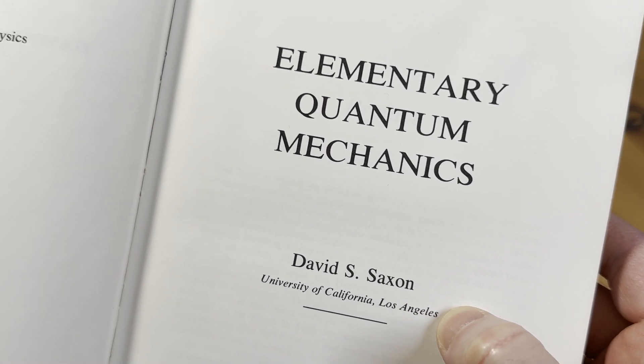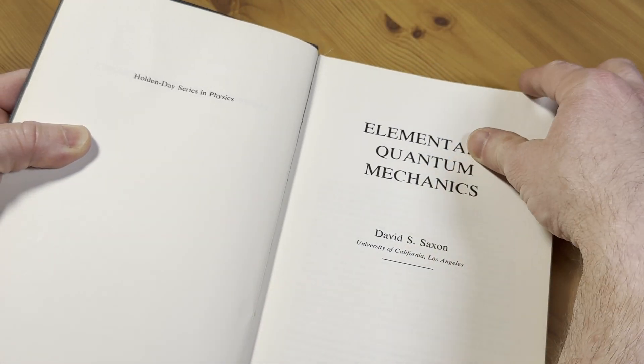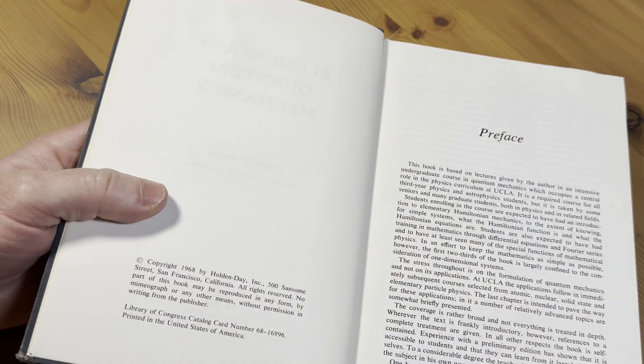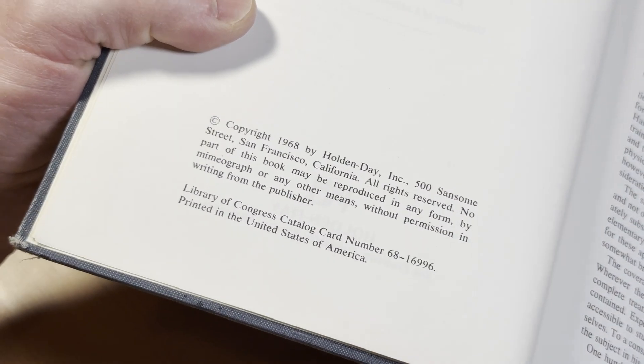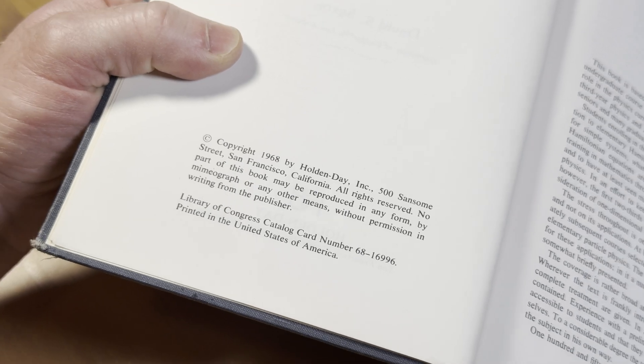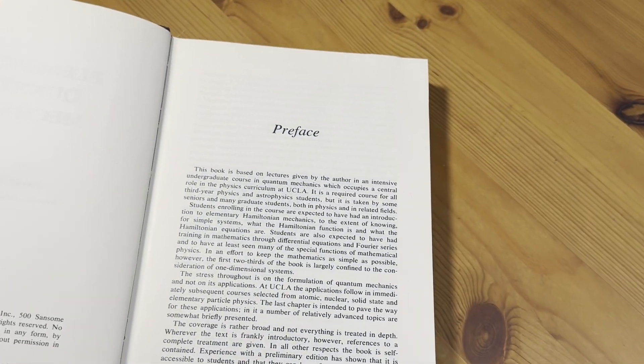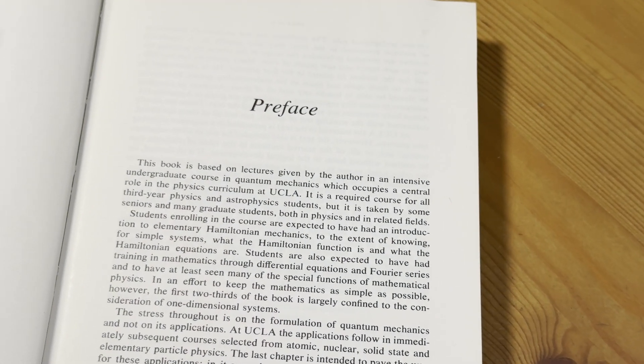David S. Saxon, Elementary Quantum Mechanics. And here is the copyright. I believe this is the first edition, 1968. That was a long time ago. I didn't even exist. Many of the viewers here of this channel didn't exist.